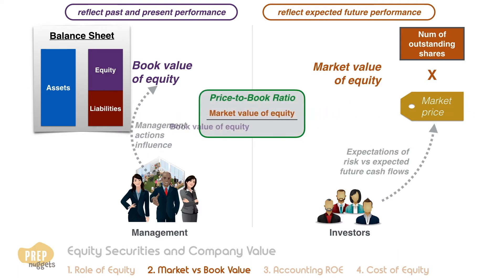The price-to-book ratio is the market value of a firm's equity divided by the book value of its equity. The PB ratio can be seen as a measure of investor confidence in a firm's future performance. A high ratio reflects strong optimism in future growth.